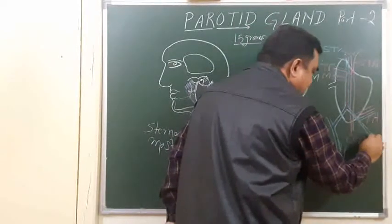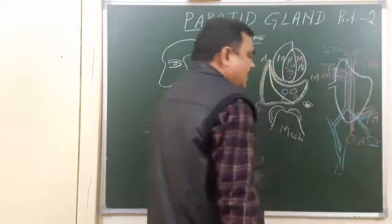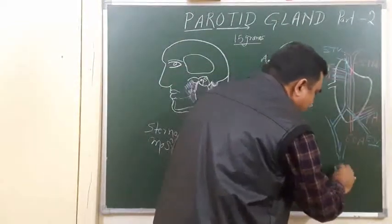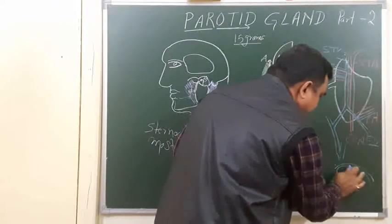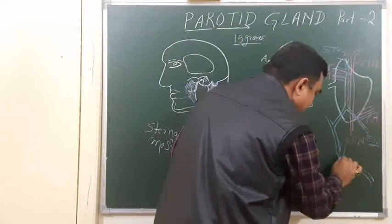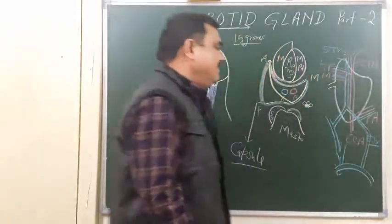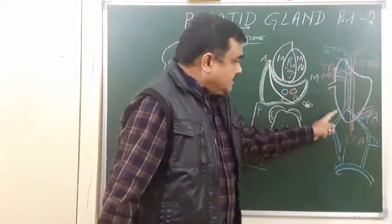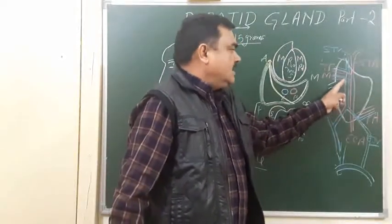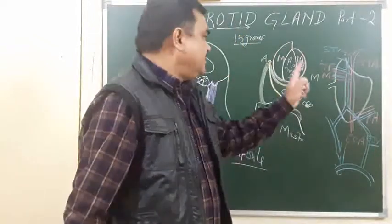The posterior division forms the external jugular vein. Both the internal jugular vein and the external jugular vein open into the subclavian vein. This completes the venous drainage passing through the substance of the gland.